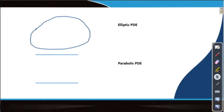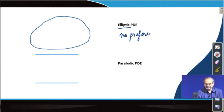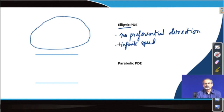In the last lecture we were talking about the behavior of elliptic partial differential equations and we tried to explain that in partial differential equations of elliptic nature we do not have any preferential direction of disturbance propagation. Disturbances propagate at infinite speed, so there is no delay in propagation of the disturbance and the system seems to come to equilibrium instantaneously.